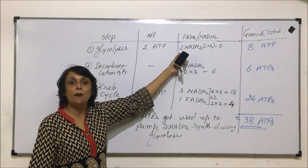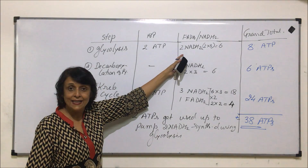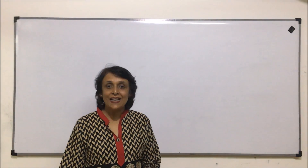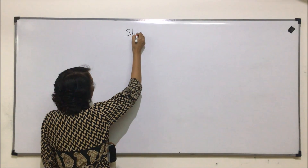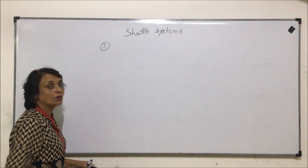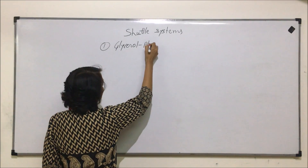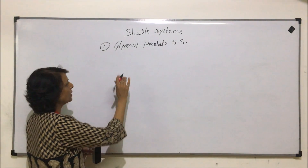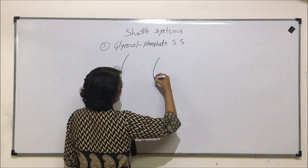These cytoplasmic NADH molecules are transported into the mitochondria via two shuttle systems. The first shuttle system is known as the glycerol phosphate shuttle system. We are talking about a cell where glycolysis takes place in the cytoplasm, and the NADH produced there needs to reach the electron transport chain in the mitochondria.